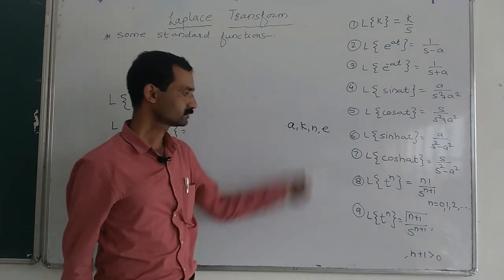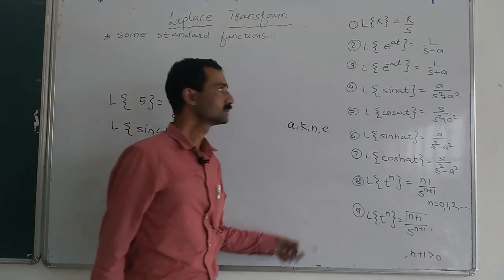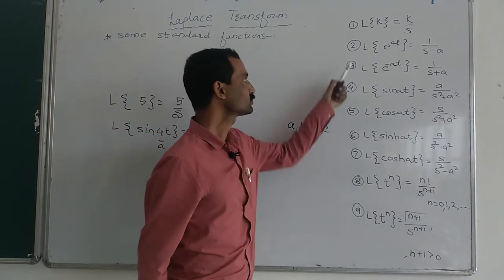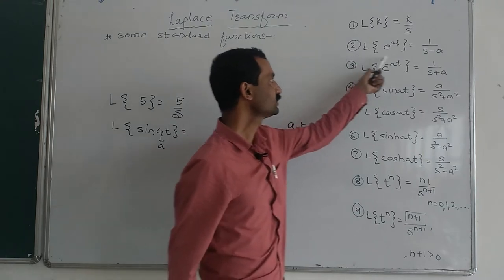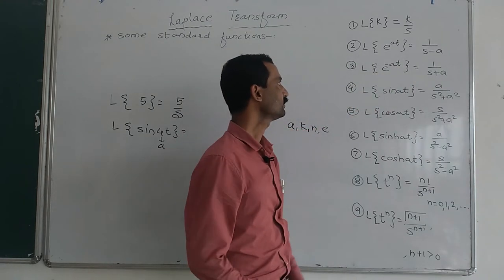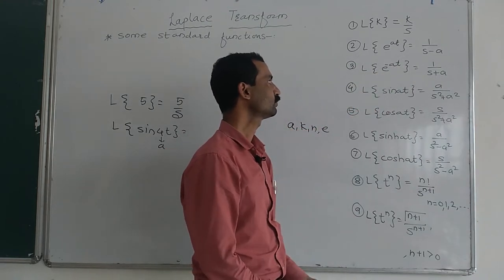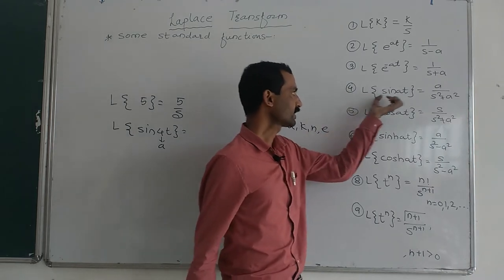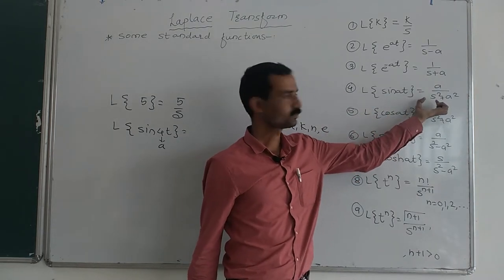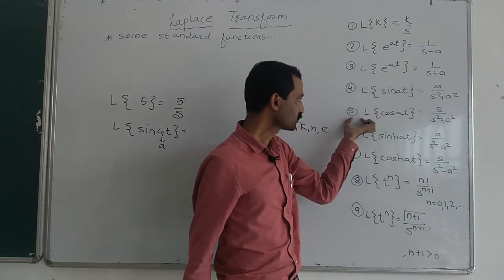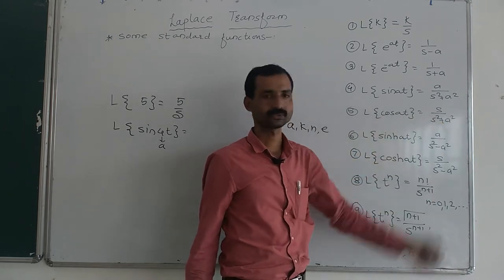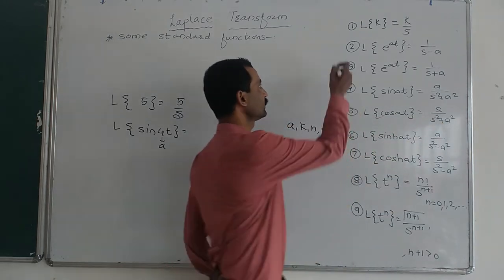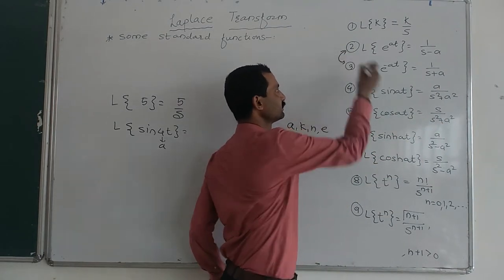Laplace of k is equal to k upon s. Laplace of e raised to at is equal to 1 upon s minus a. Laplace of e raised to minus t is equal to 1 upon s plus a. Similarly, Laplace of sin(at) is equal to a upon s squared plus a squared. Laplace of cos(at) is equal to s upon s squared plus a squared.